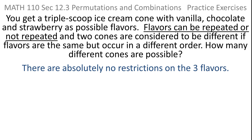There aren't any restrictions on the three flavors. You can use chocolate all three times, strawberry all three times, vanilla all three times. You can use two chocolates and a strawberry — any combination. Flavors can be repeated or not. That immediately tells you that this is not a permutation problem. The prototypical example of a permutation problem is putting people in line for a photo, and you're not going to clone a person and have that person appear more than once. Whenever you're thinking permutations, you're not duplicating the object. This problem does, so this is not a permutation problem.